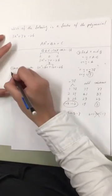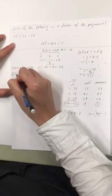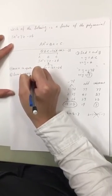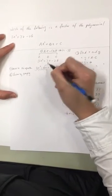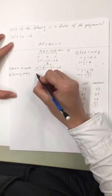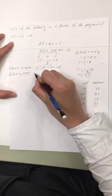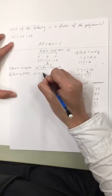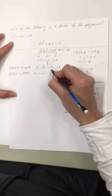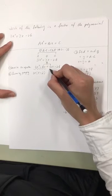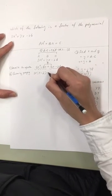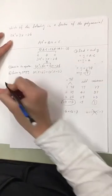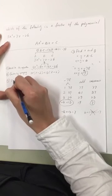Next step, factor by grouping. The common factor of first two terms is 3x. We pull out 3x, so x minus 2 left. The common factor of the third and the fourth terms is 13. So we pull out 13, x minus 2 left.